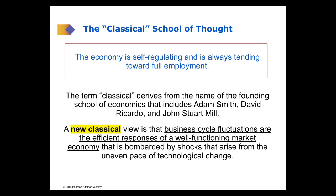If there are ups and downs in the economy, maybe because of business cycle fluctuations, that was okay — that was kind of the way a normal, healthy, functioning economy worked. Maybe technology would be changing rapidly at a given point in time, which would be reflected in a boom or recession in the economy. Again, that was all part of the normal, healthy functioning of an economy. That's kind of the way economists approached macroeconomics for a long time, certainly before Keynes.